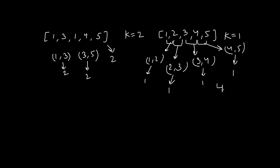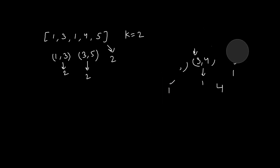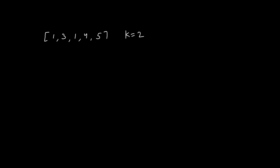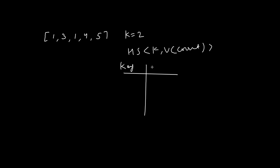Now let's see how we are going to develop an algorithm for this problem. We are going to use a HashMap for our solution. The HashMap will store the count - the key will be the element of the array and the value is going to be the count of that particular number. So one has a count of two, three has a count of one, four has a count of one, and five has a count of one.